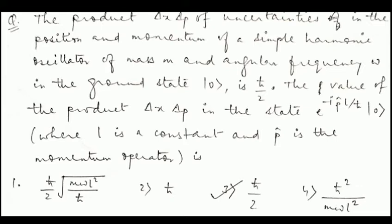That means Δx·Δp in the given state is actually equal to ℏ/2, which is the same as the product Δx·Δp in the ground state itself. So just by looking at the options you can arrive at the answer to the question.